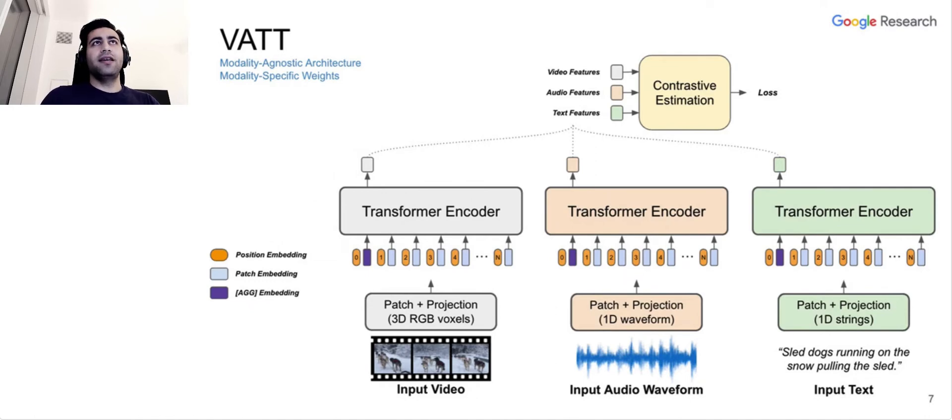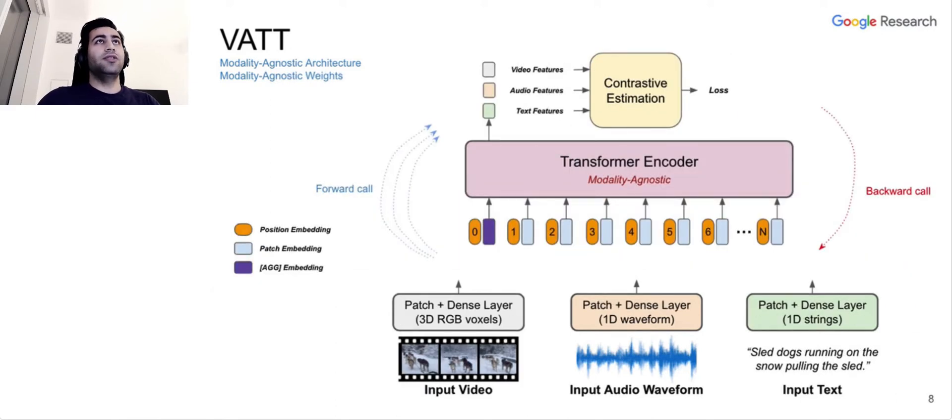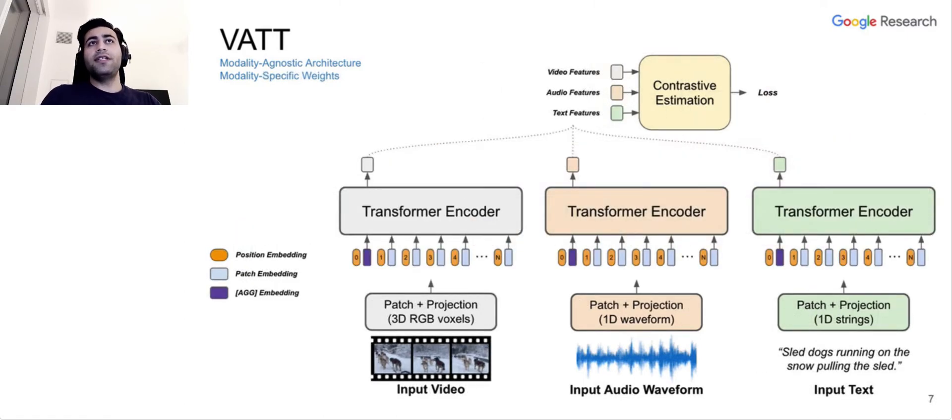So we have two settings in VAT. One of them is modality agnostic architecture, but modality specific weights. For the first setting, we have three inputs: video, audio waveform, and text. All of them are in raw domain. And we have a modality specific patch plus projection or dense layer to basically map the raw inputs to a sequence of vectors, mapping them to a vector space. And once we have the sequence of vectors, we feed them into three separate transformer encoders and extract video, audio, and text features. And using a standard contrastive estimation pipeline, we calculate the loss and backpropagate the gradients and update the weights.